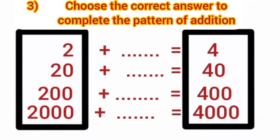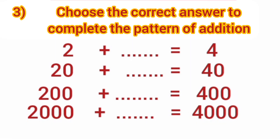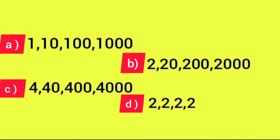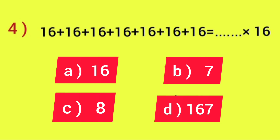In this addition pattern, on every step, one zero is increased. What will we add in 2 to get 4? We will add 2. So 2 plus 2 equals 4. Just like this, 20 plus 20 equals 40; 200 plus 200 equals 400; and 2000 plus 2000 equals 4000. For this question we have 4 options, and our correct option is option B: 2, 20, 200 and 2000.